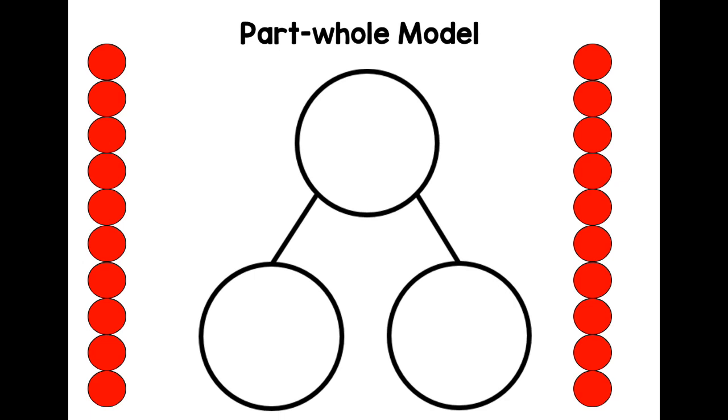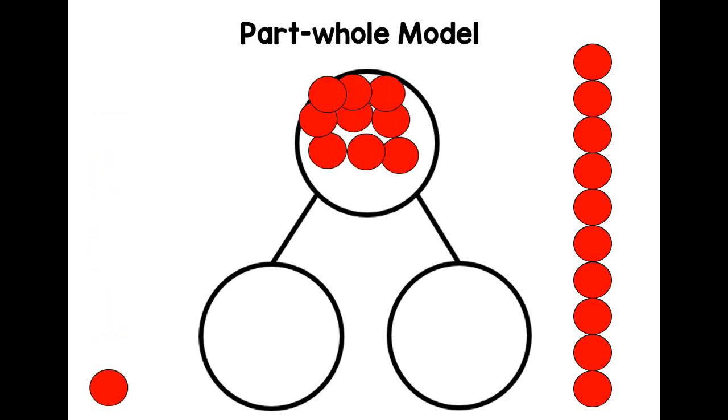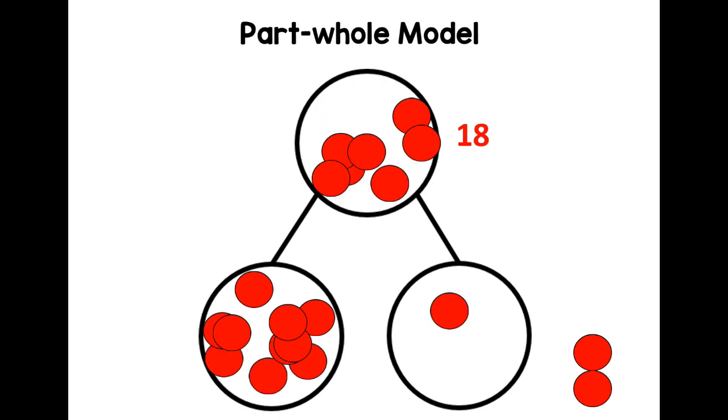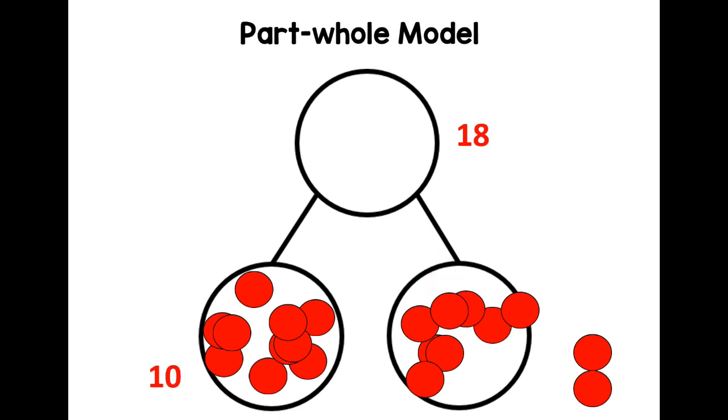Here's our part-whole model, so our number of the day goes in the top - that's 18. Remember, we always use 10 as one of our parts. You can move one down, you can move zero down, and all the other counters go in the other part. Then 0 and 18 makes 18, but as I said, we always have 10 because that helps us make sure that our partitioning, which is splitting up into tens and ones, is really strong. So we know that 18 is 10 and 8 more. Well done. We've partitioned - we've split up 18 into the tens and the ones.